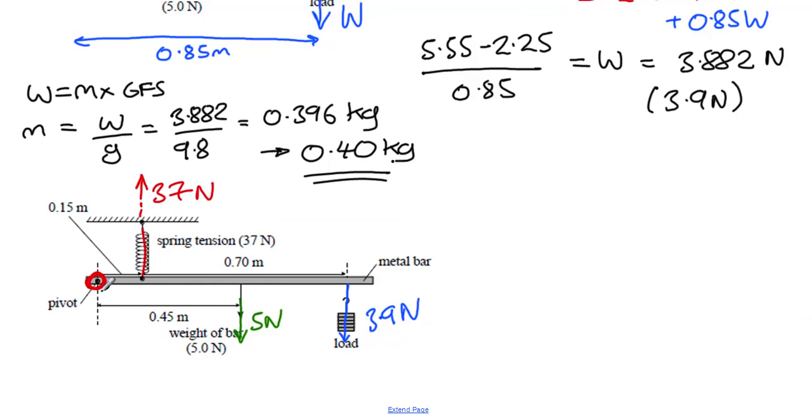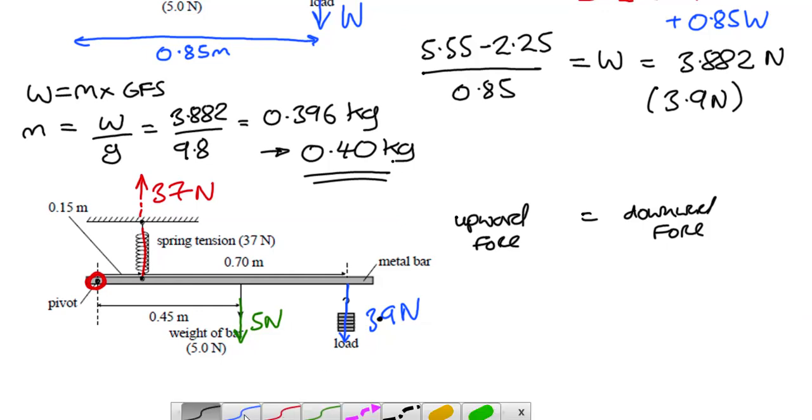We've got a pivot there, and upward forces have got to be balancing downward forces. So, if I look at this, upward force must equal to downward force. Well, you've got this great big upward force of 37, and you've got a downward force of 5 here and 3.9 here. So, you can see, I think pretty clearly, that the force from on this pivot is also going to have to be downwards. It's going to have to be pretty big to balance that big upward force. Now, I'll show you that you don't need to worry too much about being able to guess that at the start.